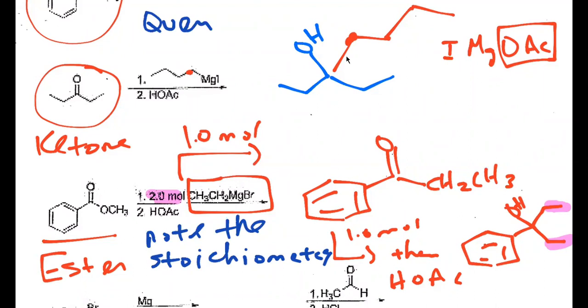Two moles of a Grignard plus an ester will give you an alcohol. One mole of a Grignard plus an ester will give you a ketone. For the exam, when writing out the products — do you want us to show the MgBr OAc side products? I won't add or subtract credit if you don't show them, but you should, because you need to get in the habit of keeping track of where everything is — it's good practice.